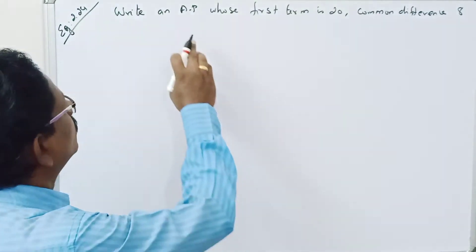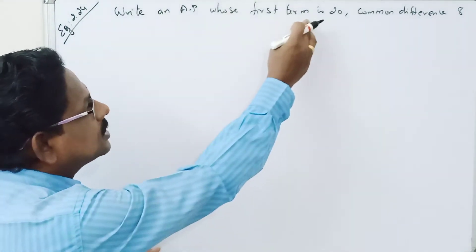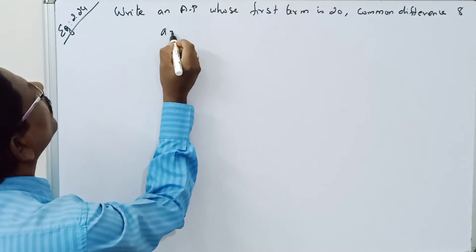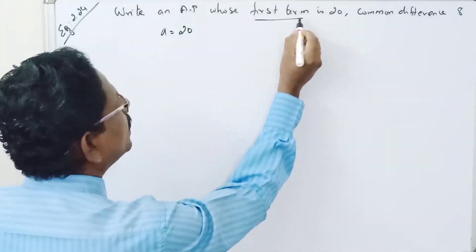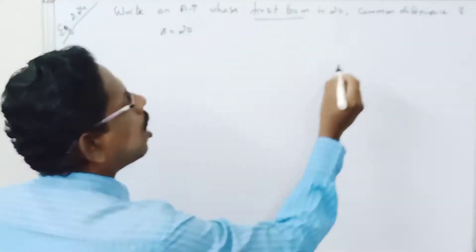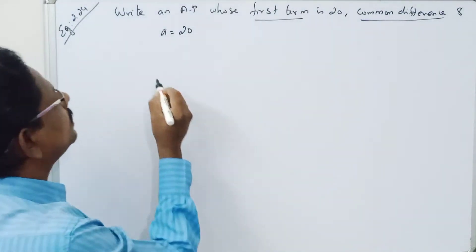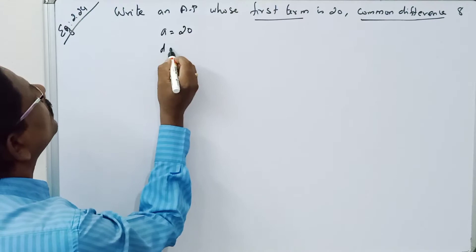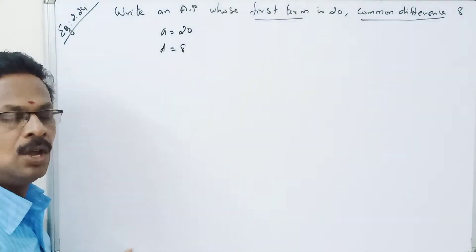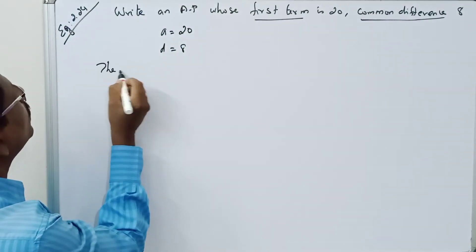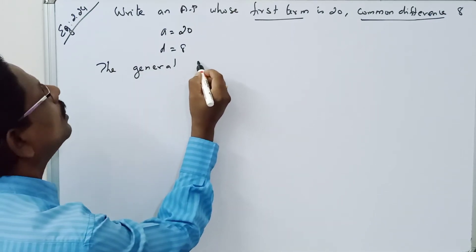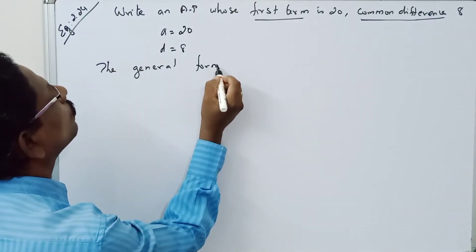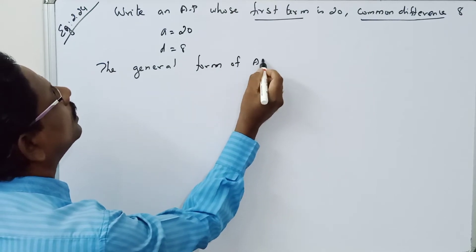Welcome to this problem. We have an AP whose first term a is equal to 20. Common difference d is equal to 8. So the general form of AP, what